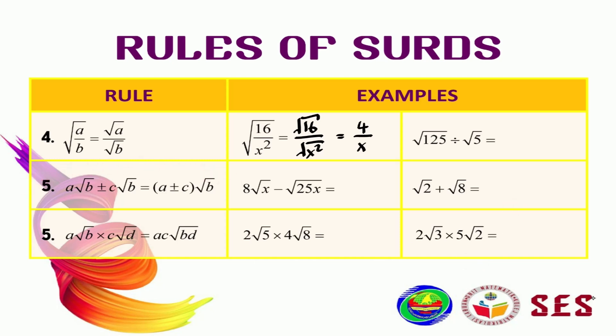Moving on to rule number 5. Generally, if you have two equal sets in an operation, whether it's addition or subtraction, we can do the operation as usual. For example, we have 8 square root of x minus square root of 25x. These two don't have the same sets, but we can simplify: rewrite it as 8 square root of x minus 5 square root of x. Now that they have the same set, we can do the operation as usual, giving us 3 square root of x.